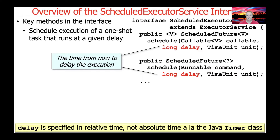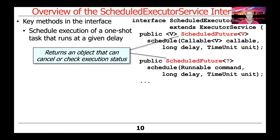The first parameter to both of these schedule methods is the time from now — from the point where the method is invoked — to delay the execution. It's basically saying: run this task at this point in the future. Note that the delay is always specified in so-called relative time, which is the time from when it's invoked, rather than absolute time. There are other timer mechanisms in Java that use absolute time, like the Java Timer class. These methods can return values that allow callers to cancel and/or check the execution status — you can basically think of these as futures on steroids.